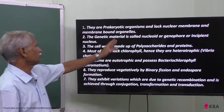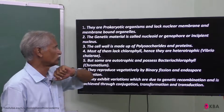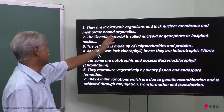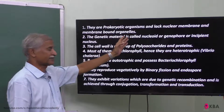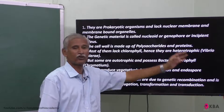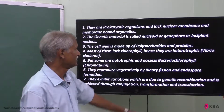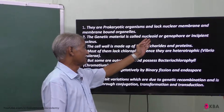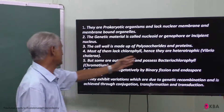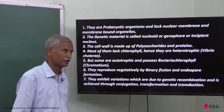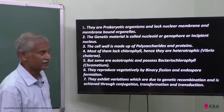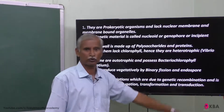In prokaryotes like bacteria, there is no nuclear membrane. The genetic material is called the nucleoid or genophore, also referred to as incipient nucleus — not a true chromosome. The cell wall is made up of polysaccharides and proteins combined together.